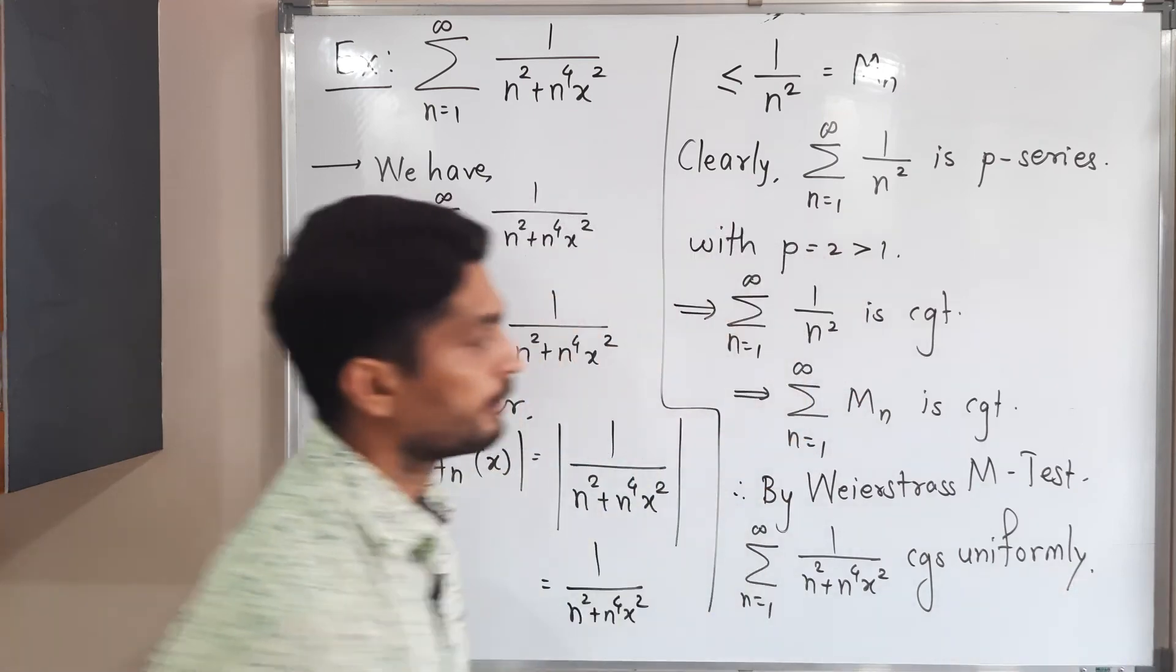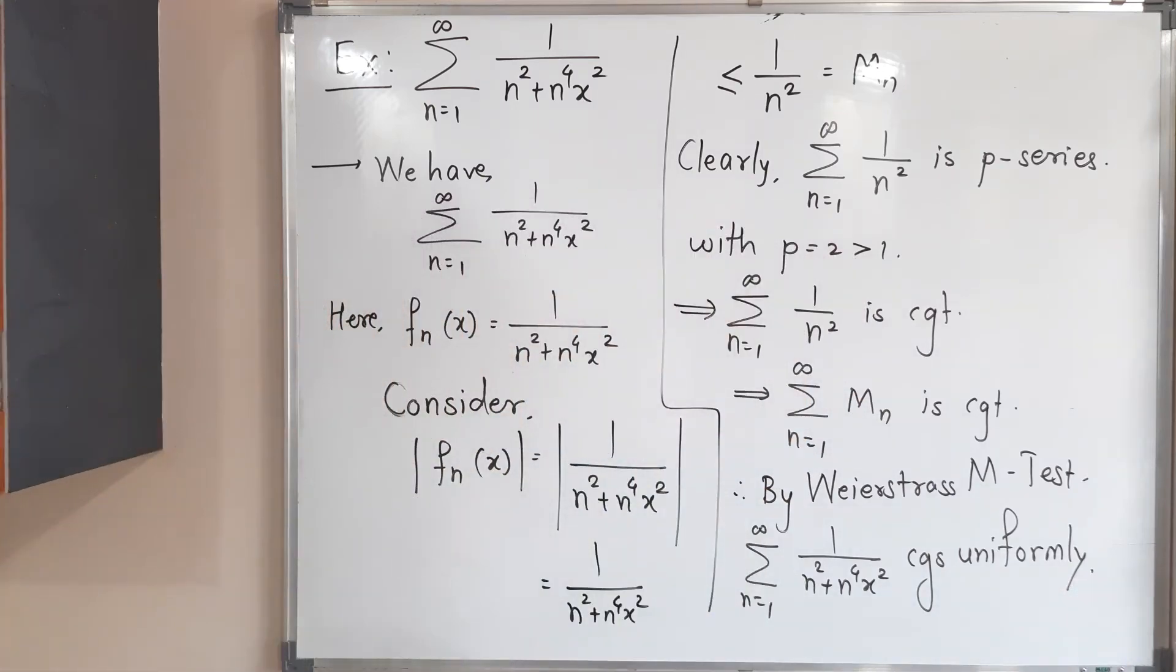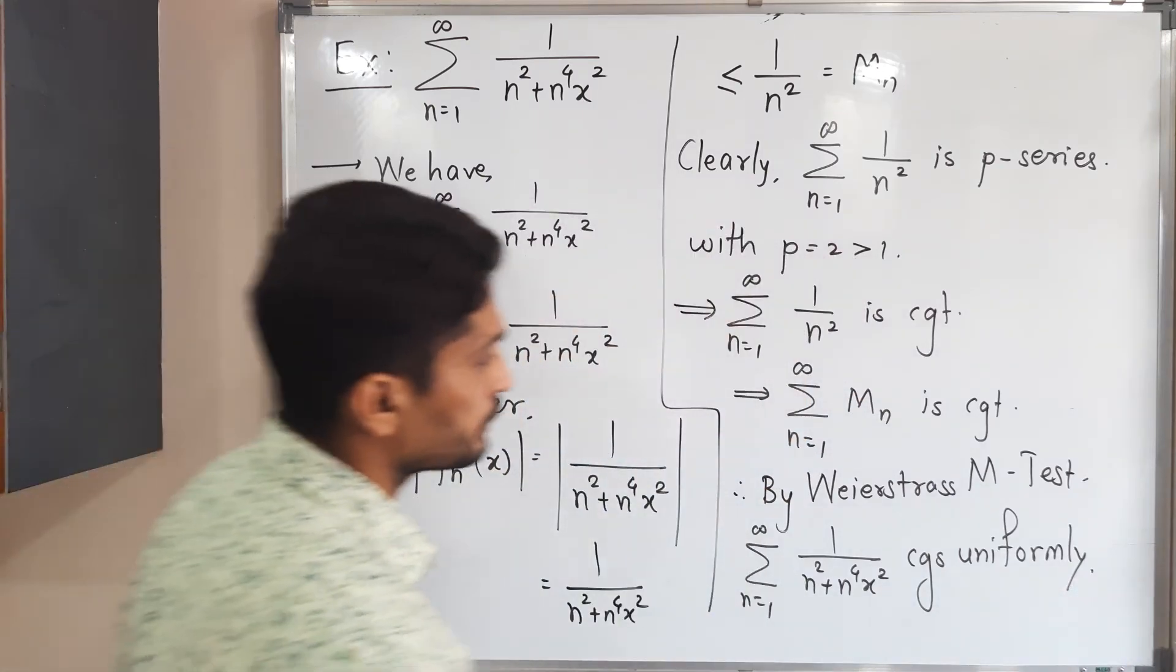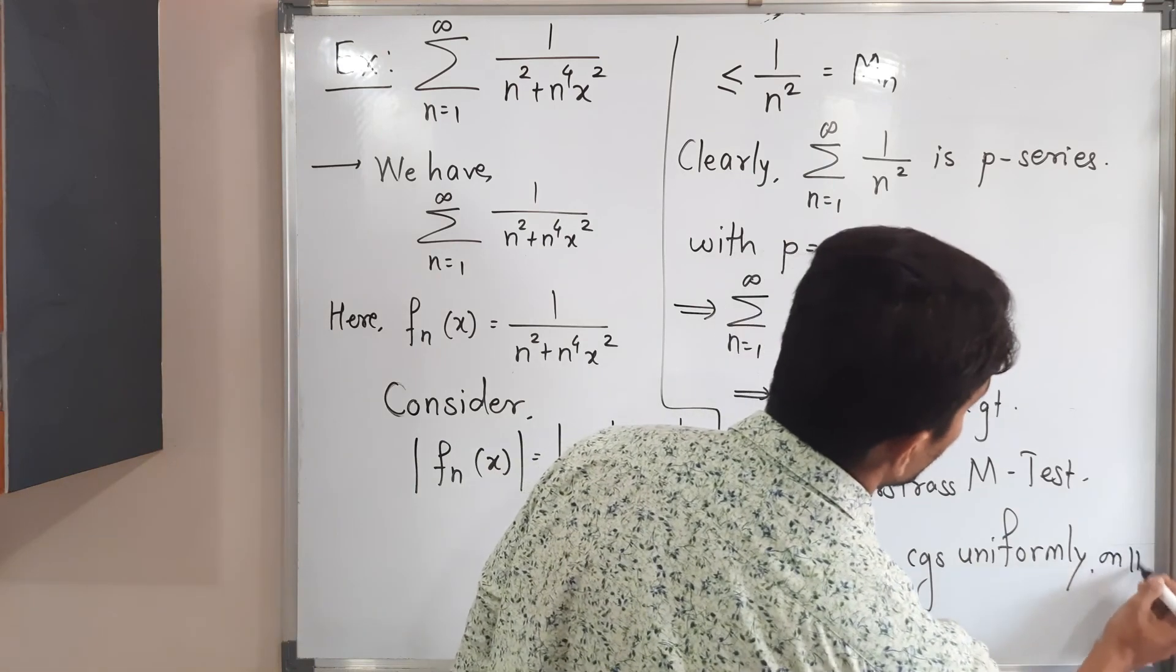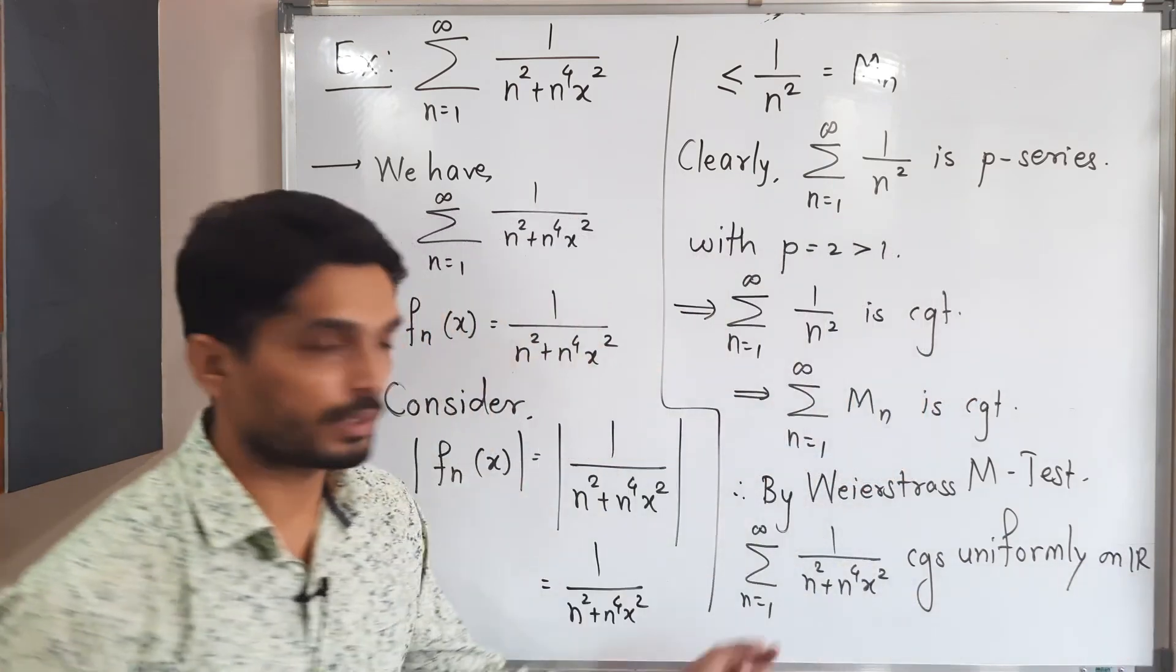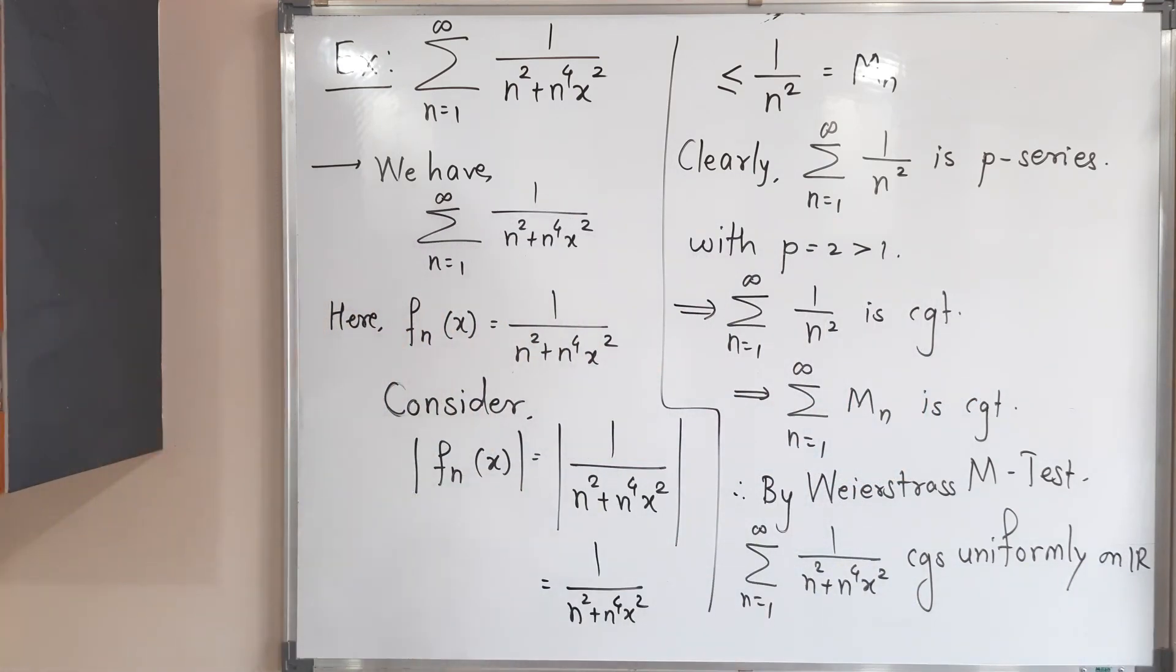So in this way we prove this one. And it converges uniformly I should mention on R, since this is true for any x belongs to R. So that's why it converges uniformly on R.